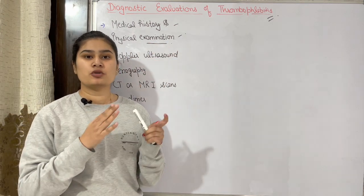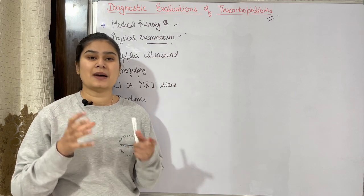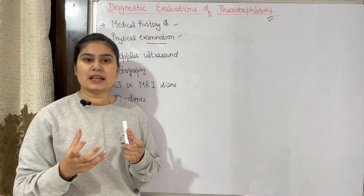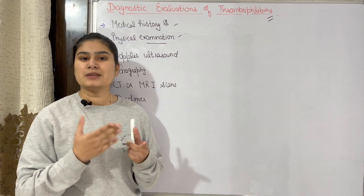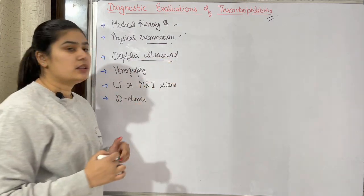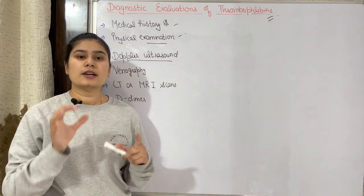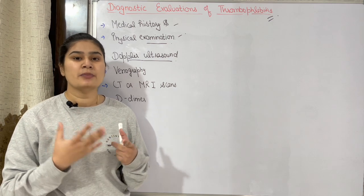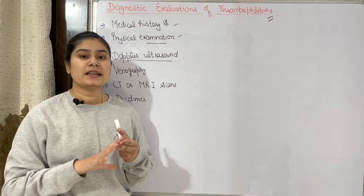After taking medical history, we will perform a physical examination. The physician will perform a thorough general examination. For example, if thrombophlebitis is in the leg, we will check redness, warmth, and tenderness in that particular area. After physical examination, we can perform a Doppler ultrasound, which tells us which vein — superficial or deep — is affected.